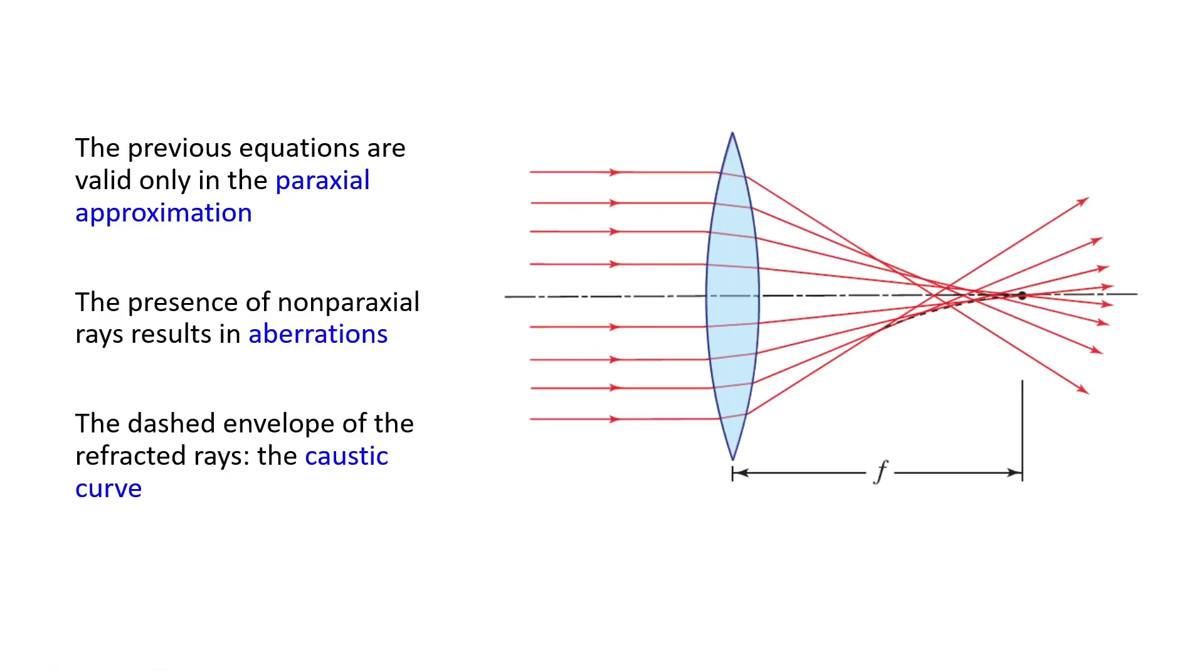The dashed envelope of the refracted rays is called the caustic curve. These are refracted rays and this is an envelope to the rays, which is shown by a dashed line. We saw another example of caustic curve in the previous lessons.